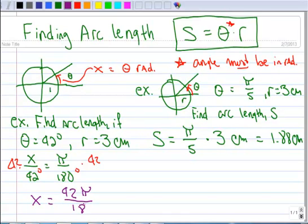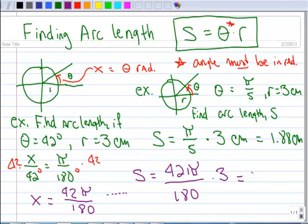So now I know that x in radians is 42π/180. I don't need to reduce it because I'm going right into my formula for arc length. So arc length is theta times r. That's 42π/180 times 3. When you multiply that out, you get 2.199 centimeters. So there's a couple examples of finding arc length, and that's the end of this lesson.